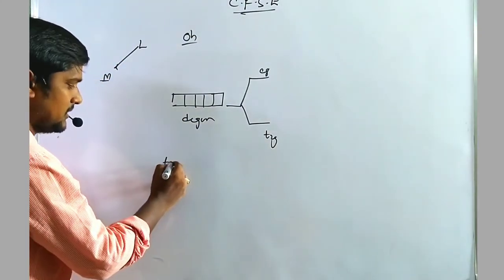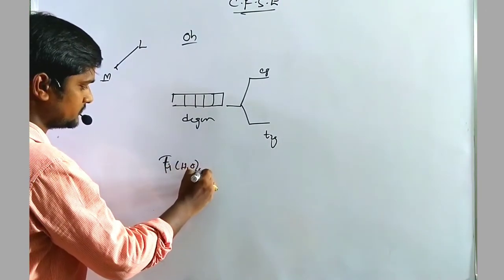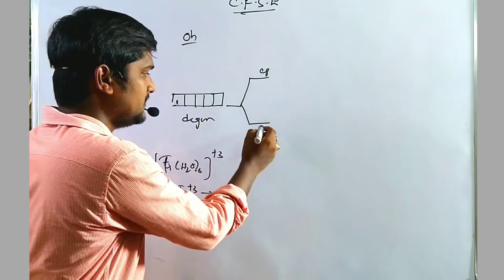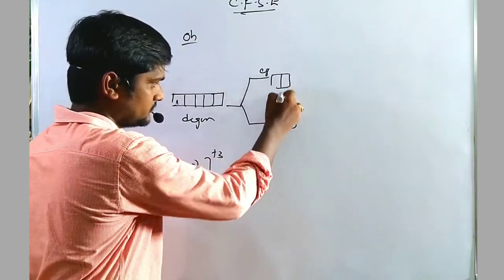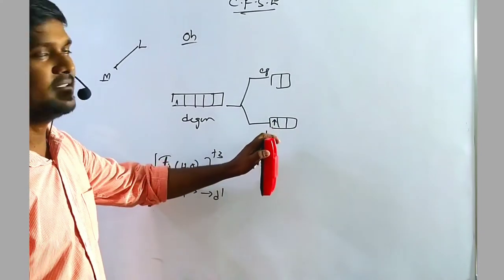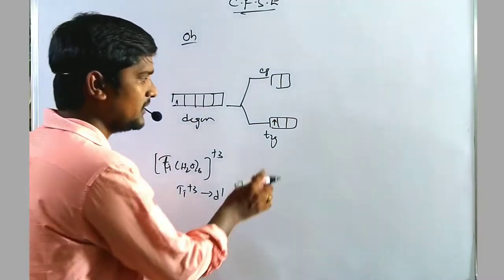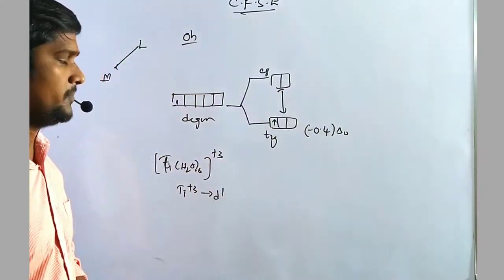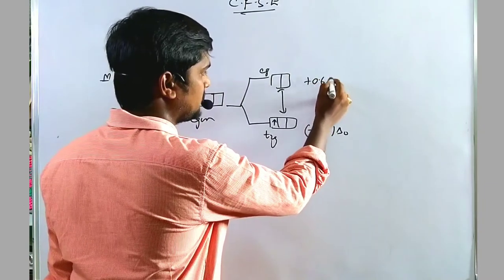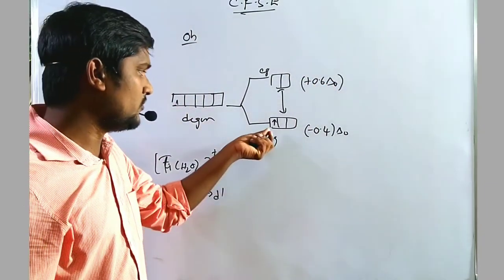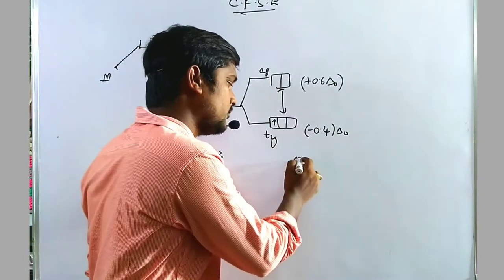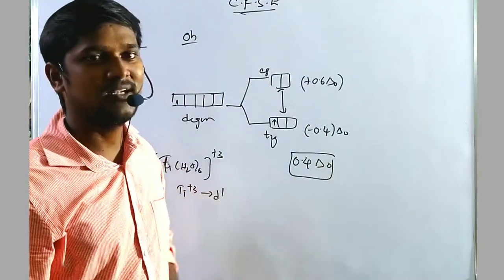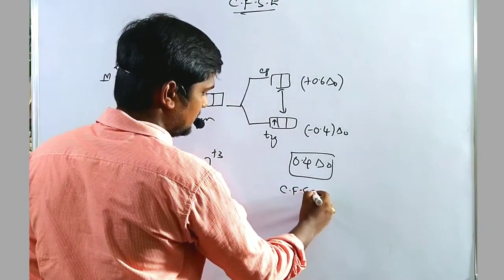Let us take one example: the titanium [Ti(H₂O)₆]³⁺ complex. Titanium 3+ means D1 configuration — it has only one electron. That one electron enters into the T2G set, which is the lower energy level. The T2G orbital has energy of minus 0.4 ΔO, and the EG set has plus 0.6 ΔO. So the one electron carries 0.4 ΔO of splitting energy, and that quantity is nothing but the CFSE.